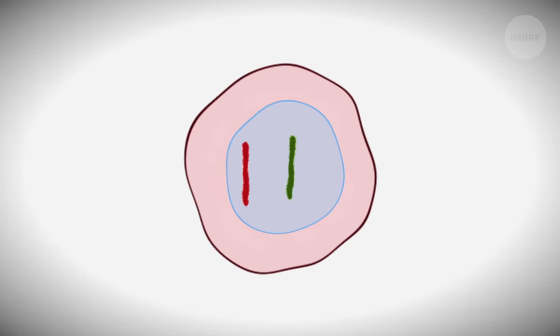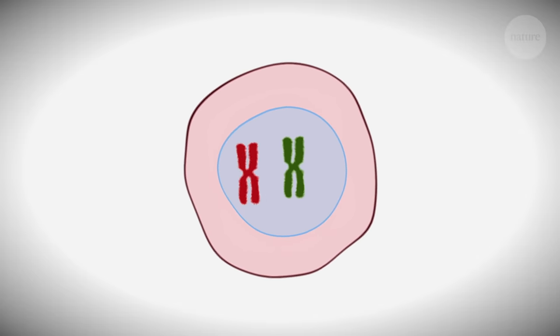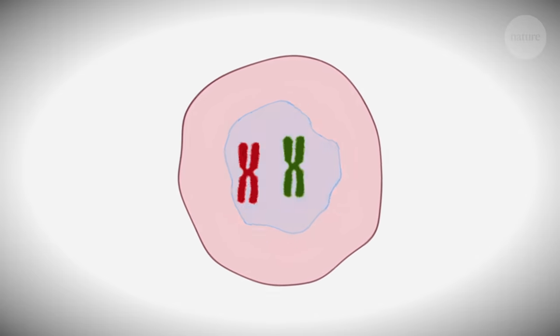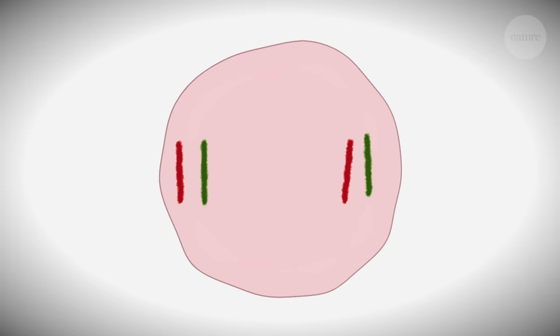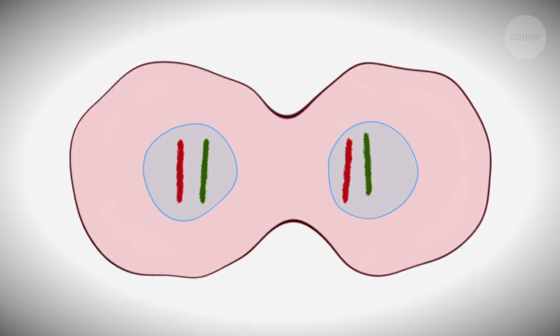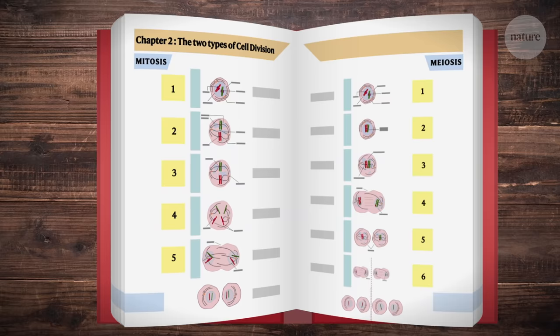Normally, before a cell divides, it needs to duplicate all its DNA so that each new cell gets a full copy. Over the past 180 years, since cell division was first described, only two types of cell divisions have been extensively studied. These two types are mitosis and meiosis.